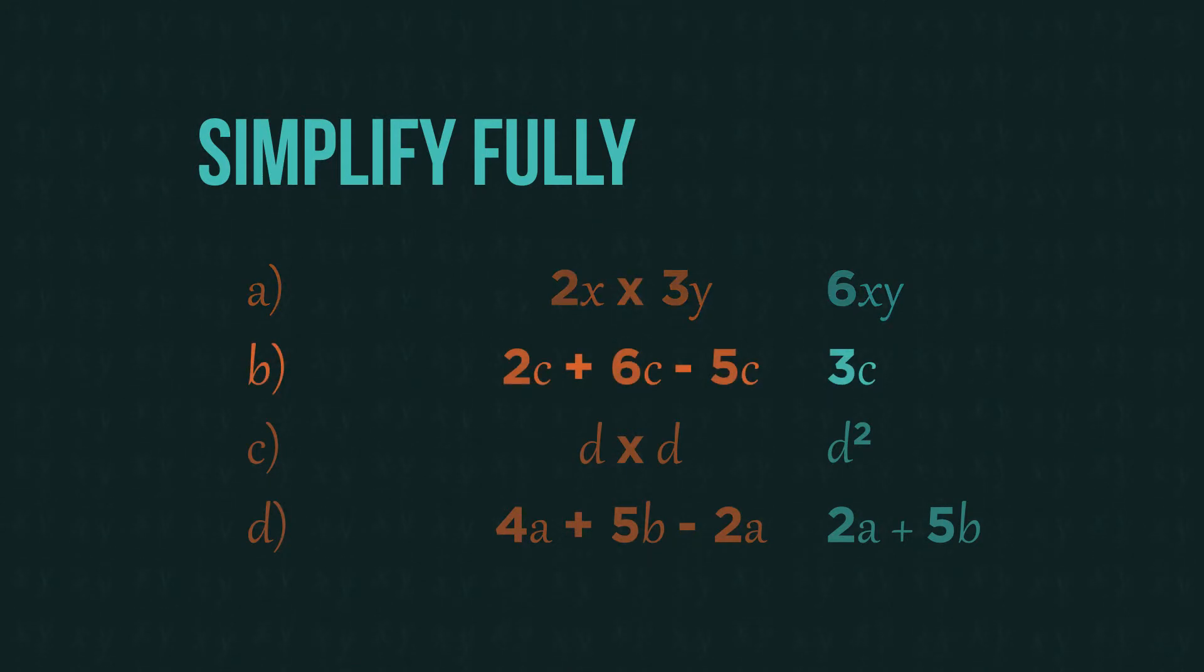In the second one, we group the same letters together. So 2c plus 6c minus 5c gives us 3c.